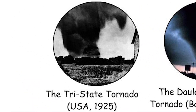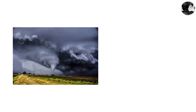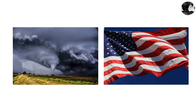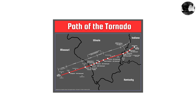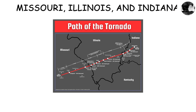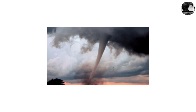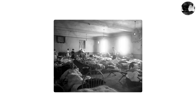The Tri-State Tornado, USA, 1925. On March 18th, 1925, one of the most catastrophic tornadoes in American history carved a path of destruction through Missouri, Illinois, and Indiana. Known as the Tri-State Tornado, this monstrous storm killed 695 people and injured over 2,000 others.